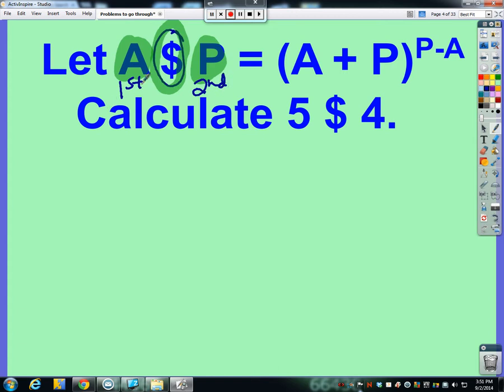So anytime you see this, then that means you're just going to do this with those numbers. So we're gonna take the first number plus the second number, get that quantity, and then take that to the second number minus first number's power. And that's it.